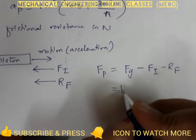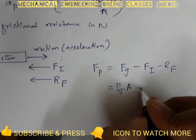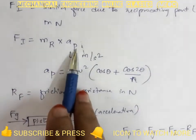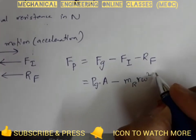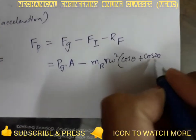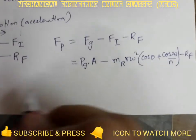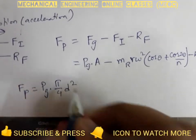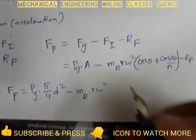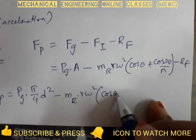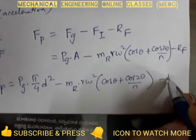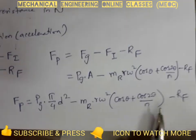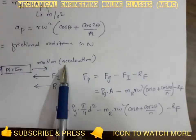Expanding the terms: Fp equals pressure times area minus FI, where FI equals MR times AP, and AP equals R omega squared into (cos theta plus cos 2 theta divided by n), minus RF. In full: Fp equals Pg times (pi by 4 d squared) minus MR times R omega squared times (cos theta plus cos 2 theta divided by n) minus RF. This is the piston effort when the piston is moving rightward or towards IDC, i.e., during acceleration.